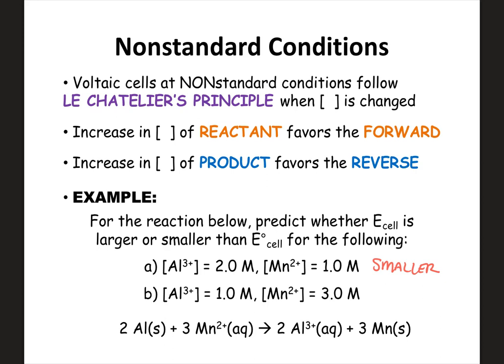For condition B, the Al³⁺ is one molar but the Mn²⁺ is three molar — the non-standard one. The Mn²⁺ is on the reactant side at a greater concentration, so the forward reaction is going to be favored, and the E for the cell is going to be larger than E naught. So if the forward reaction is favored you'll have a larger E, and if the reverse is favored you'll have a smaller E. Just use Le Chatelier's principle — no math required here.